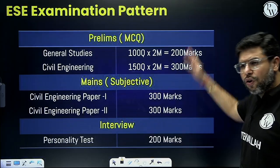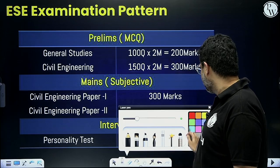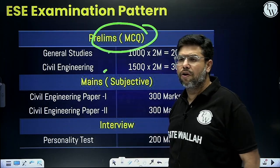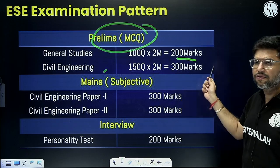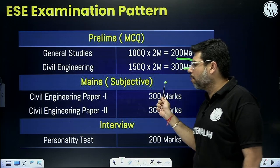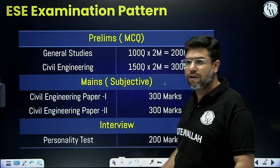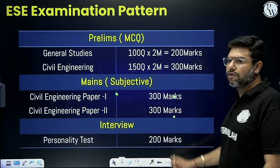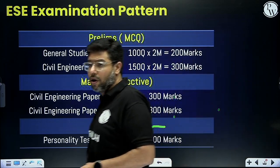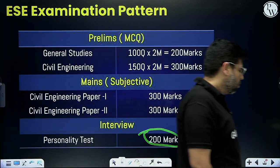The exam is conducted in 3 stages. The first stage is prelims — in prelims you get 2 papers: one GS paper of 200 marks and one civil engineering paper of 300 marks. Once you qualify prelims you get an opportunity to write mains, which is also divided into 2 papers of civil engineering only, each of 300 marks. Once you qualify both prelims and mains, you get an opportunity to sit for an interview where the maximum marks allotted is 200.